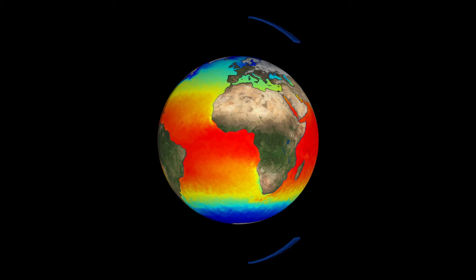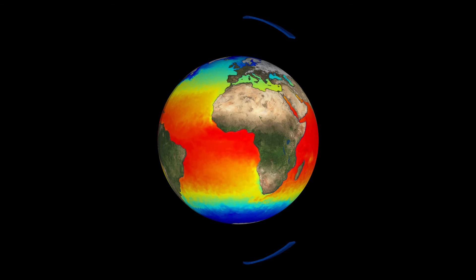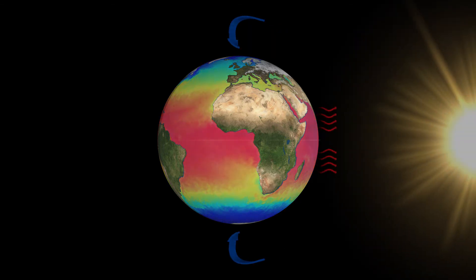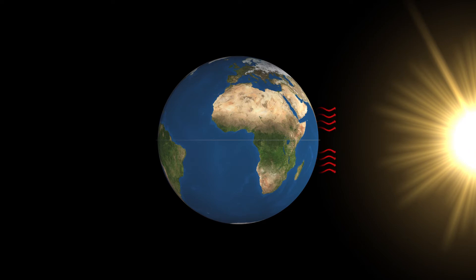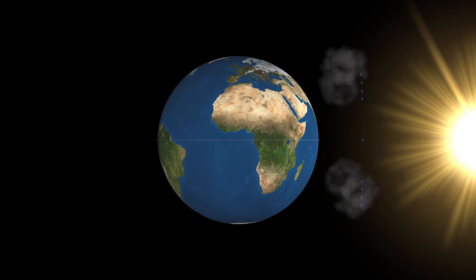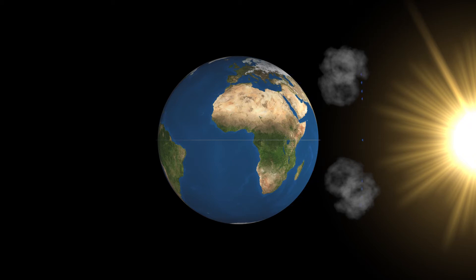In reality, the Coriolis effect caused by a rotating Earth limits the latitudinal extent of these cells. The latitudinal distribution of heating by solar radiation and its redistribution by the major atmospheric circulation cells leads to distinct zones of evaporation in the tropics and distinct zones of precipitation at the equator and at mid-latitudes.